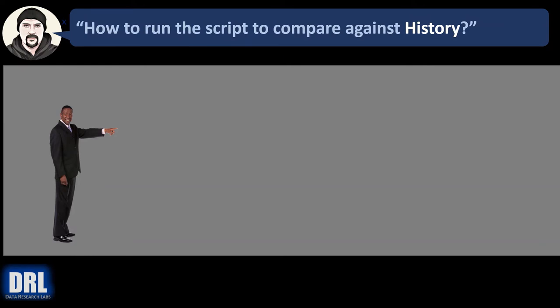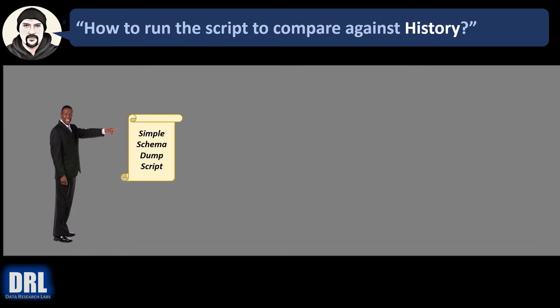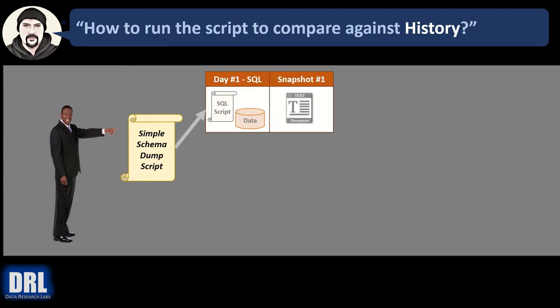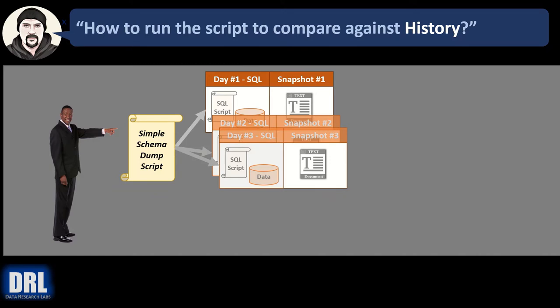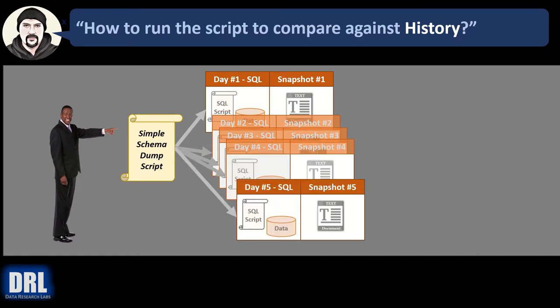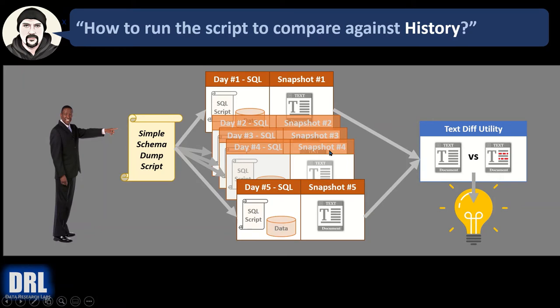How do you run the script to compare against history? Start with the same simple schema dump script. Run it on day one to get a snapshot, day two, day three, day four — each time getting a snapshot. On day five, an event happens and you want to compare day five against day one. Load up the text files for both days in your text diffing tool and you'll quickly identify any elements that are different.